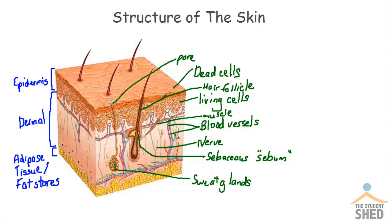Those blood vessels are responsible for the movement of nutrients, oxygen, and deoxygenated blood throughout your body, particularly in the area of your skin. Any nutrients passed through the blood are then diffused up into the epidermal layer.